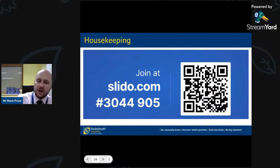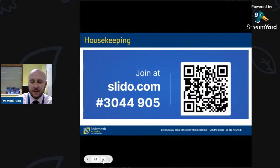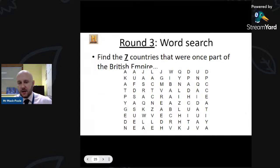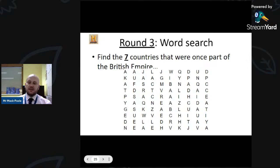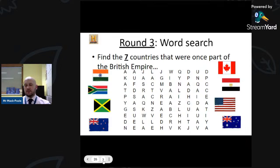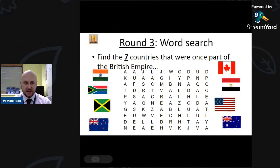Round Three is a word search round. Find the seven countries that were once part of the British Empire. I'm going to be very kind — on the next slide there are some hints with flags that will help. You need to know your flags though! Put your answers in the Slido. I'll be mightily impressed if you can get any of those answers.